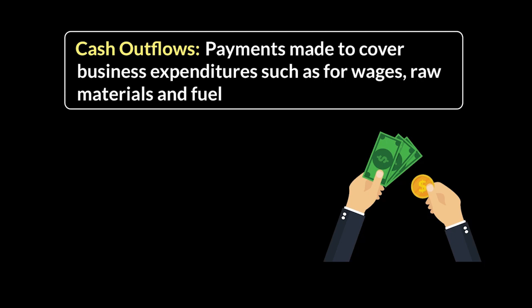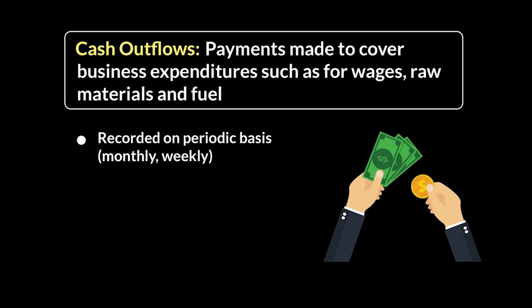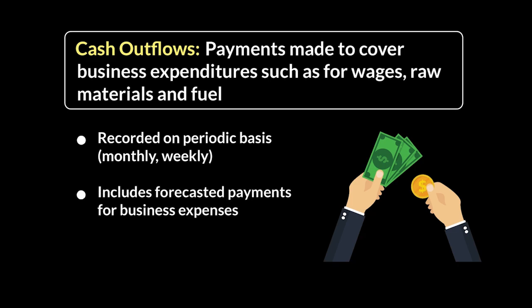A few key points about cash outflows: first, similar to inflows, these are recorded in a periodic manner — monthly or weekly. These are also forecasted payments. The business is not able to predict with 100% accuracy what expenses will be six or eight months later, since currency exchange happens and prices go up, so a lot of things can change in the near future.